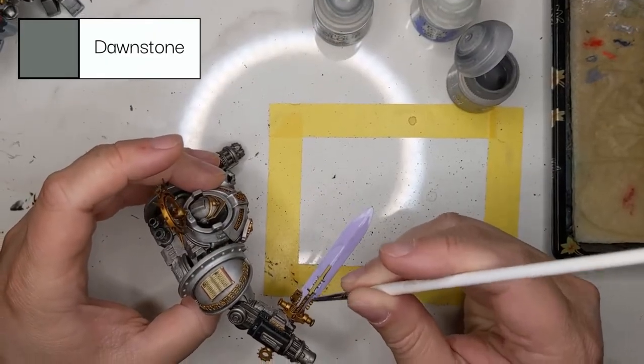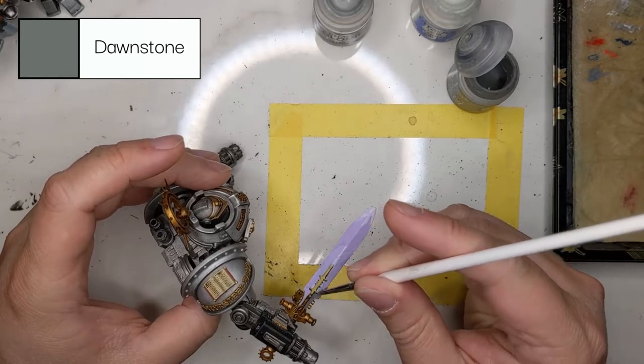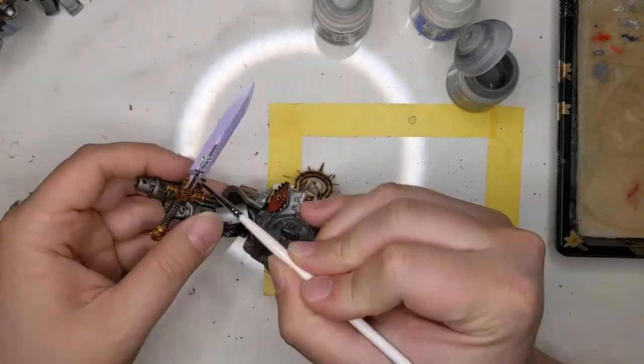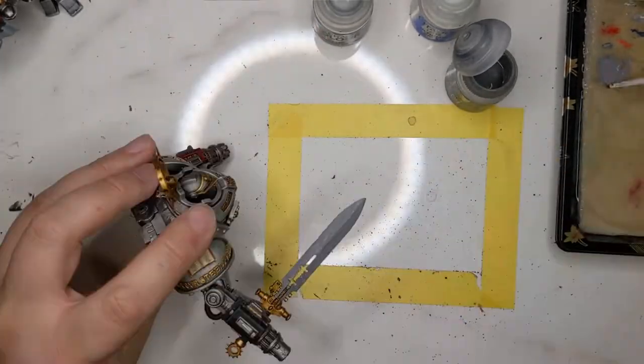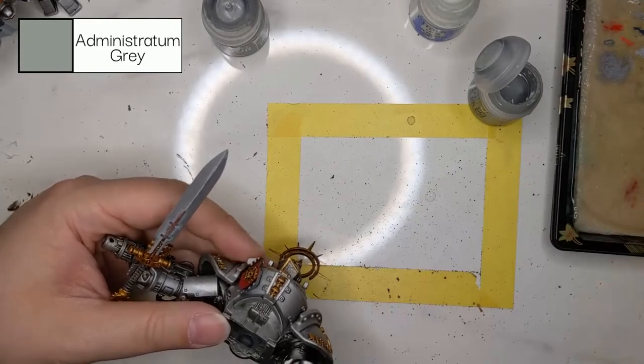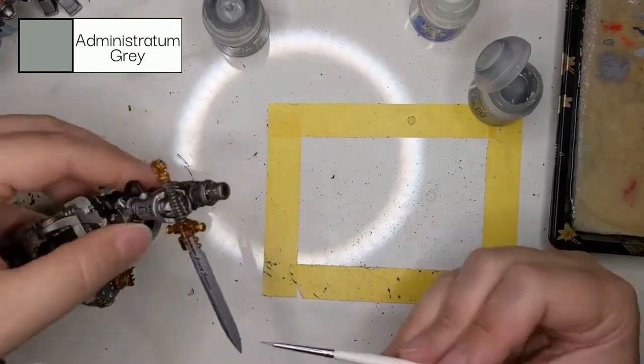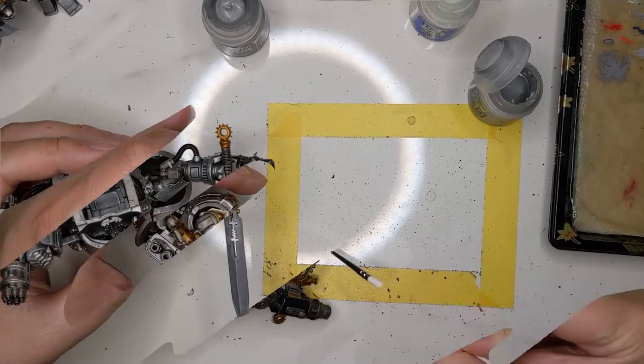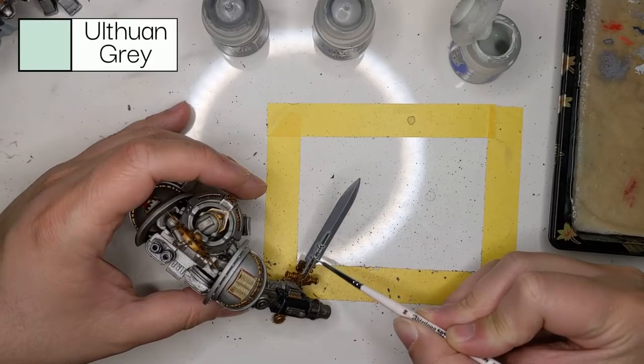Now we're going to the sword. We're using Dawnstone as a base coat, and that will give us a nice medium gray so that we can highlight first with Administratum Grey at the edges of the blade.